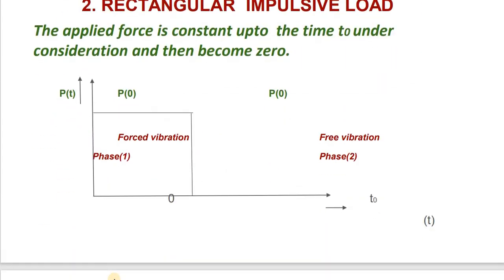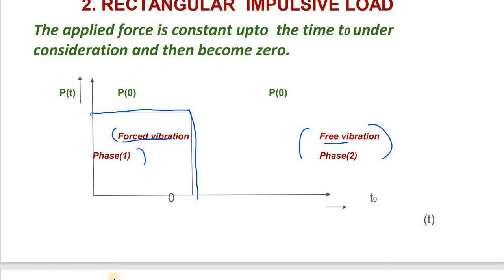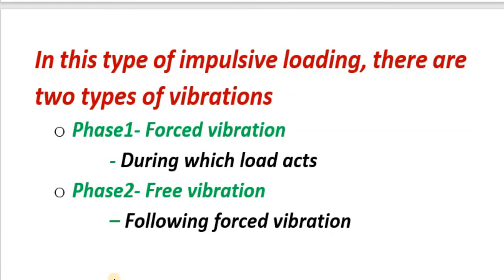Next, let us look at the rectangular impulse load. A rectangular impulse has two conditions: phase 1 where load is present (forced vibration), and phase 2 where no load is present (free vibration). The applied force is constant up to time t0 and then becomes zero. So there are two phases: forced vibration followed by free vibration.